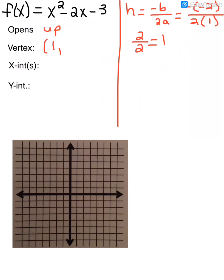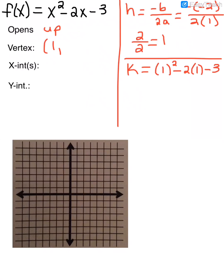To find k, I take my h and plug it into the function where x is. So my k is going to be: I plug in 1 for x — 1 squared minus 2 times 1, minus 3. When I simplify that, 1 squared is 1, negative 2 times 1 is negative 2, minus 3. So k is negative 4. So my vertex is at 1, negative 4.